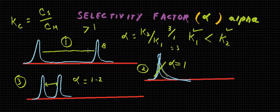So we have another situation, case 2, where alpha value equals 1, that is K1 is equal to K2. So if K2 and K1 have the same value, then alpha will be equal to 1, and there will be no separation of these two components. These two components will elute at the same time, so no separation.